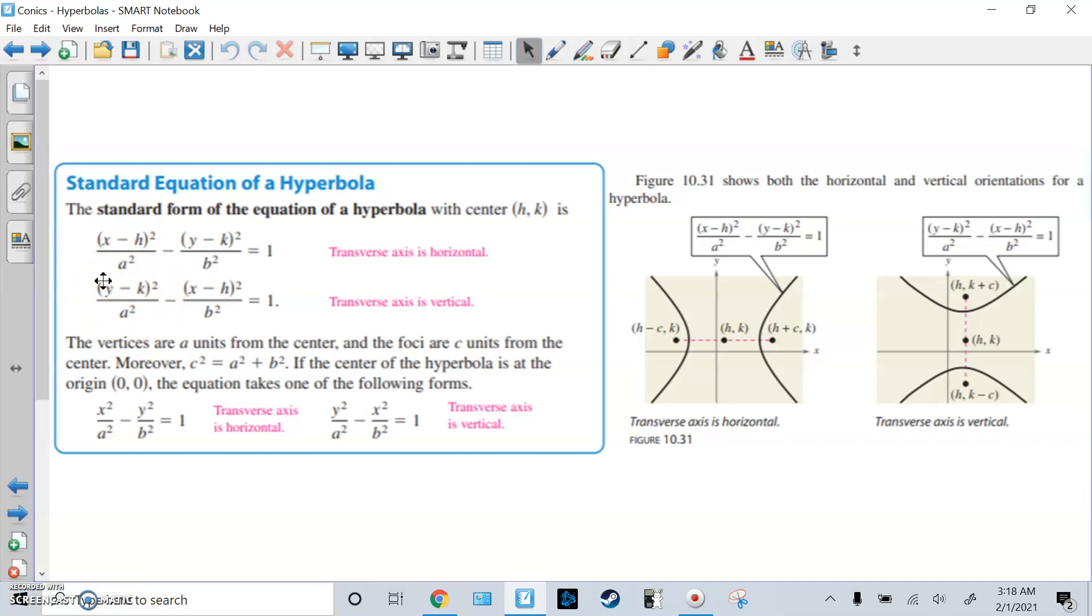A is no longer the bigger one. It might be smaller, it could be bigger. But now it just matters which one's positive of the two fractions. The vertices are A units from the center and the foci are C units from the center. And we get C squared equals A squared plus B squared now. And if the center is (0,0), you plug in 0 to each h and k, you get these two. But again, use this formula. That's more generic for any center.